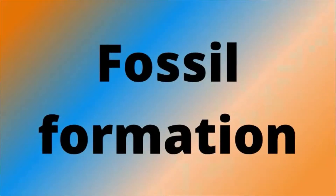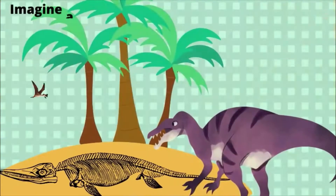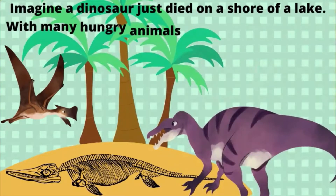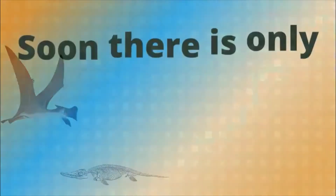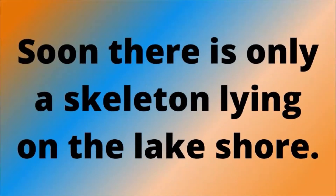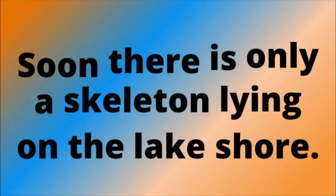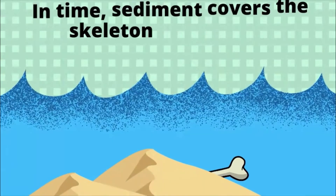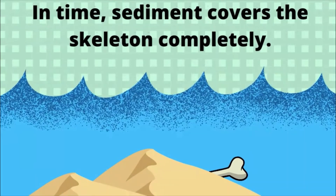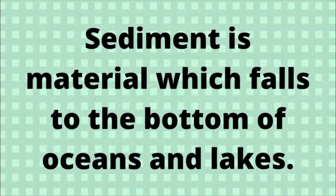Fossil Formation. Imagine a dinosaur just died on the shore of a lake. With many hungry animals around, the soft parts such as the skin and flesh do not last long. Soon there is only a skeleton lying on the lakeshore. The position and depth of the lake might change until the bones are permanently covered in water. In time, sediment covers the skeleton completely.